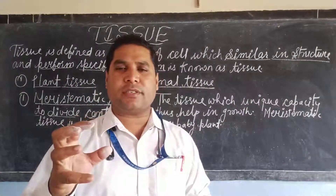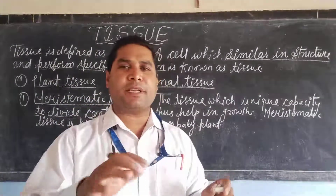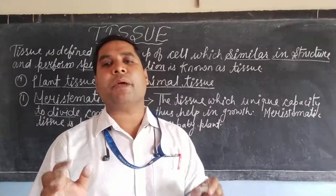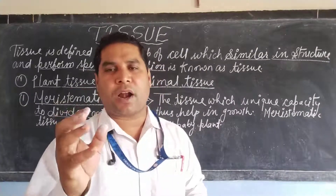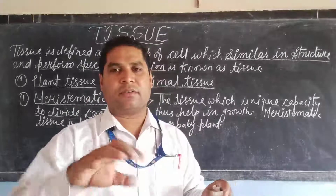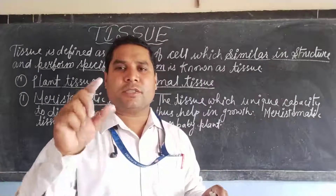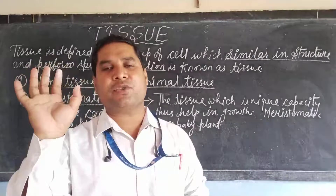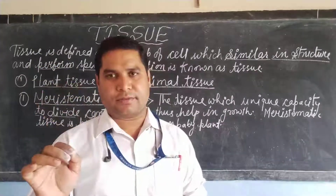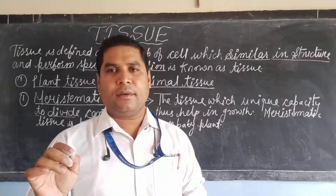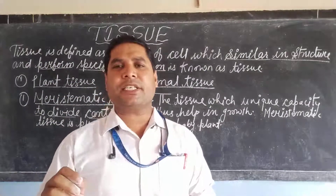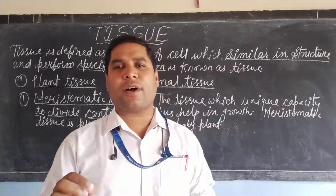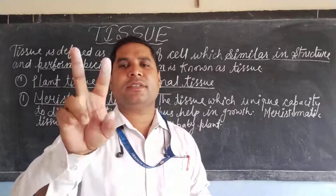Meristematic tissue is basically present in the embryo or baby plant — meaning small seedlings. In small saplings, meristematic tissue is present in all parts. Meristematic tissue is classified according to function into two types.